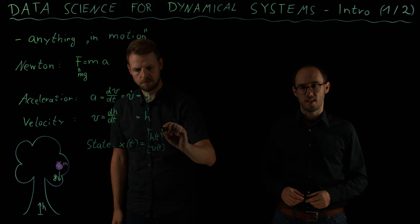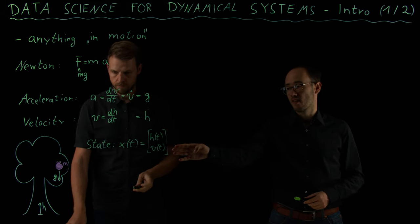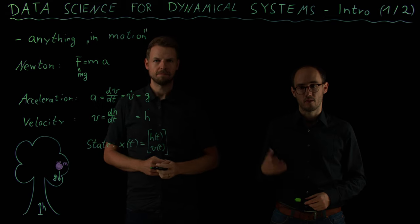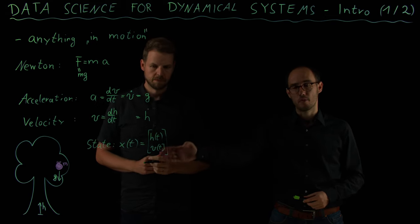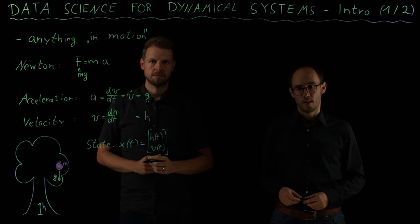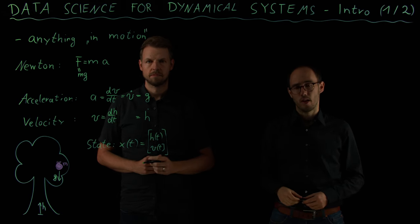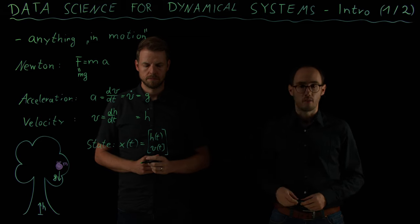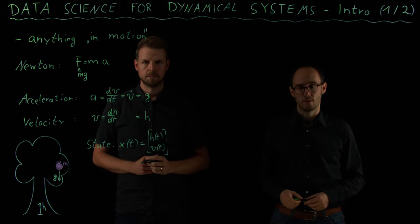In this example, the state x, as Sebastian writes down right now, is the height and the velocity. So this fully describes all the information we need to describe the motion of the apple when it's falling down. More particularly, it's also a description of the energy, because in the height we have the potential energy via gravity, and in v of t we have the kinetic energy when the apple starts to fall down.